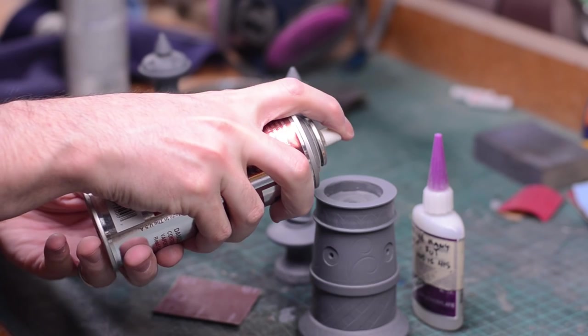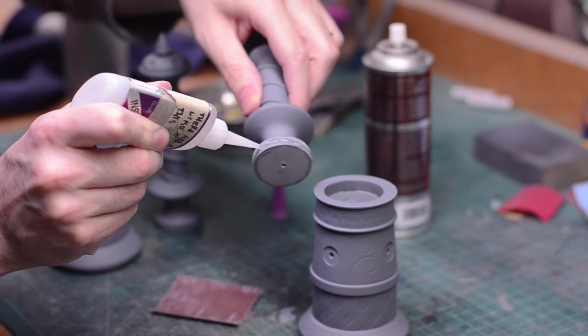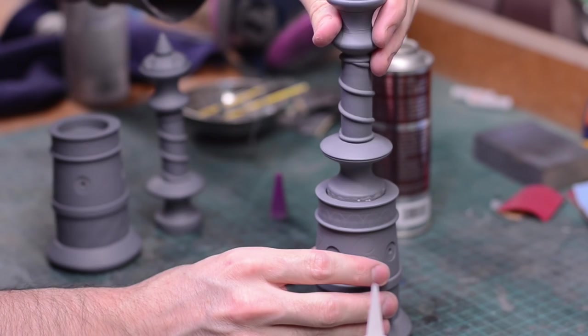For urethane kits like this, super glue works really really well. You can just spray a little accelerant on one piece and then put glue on the other piece, then when you match them together they will bond instantly.